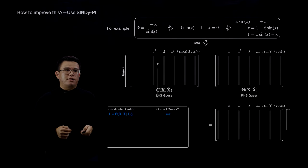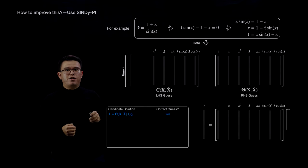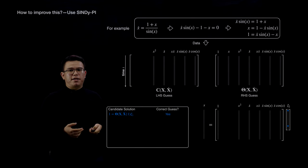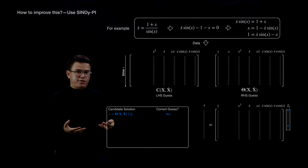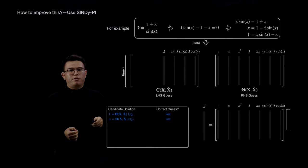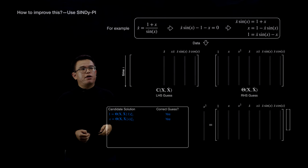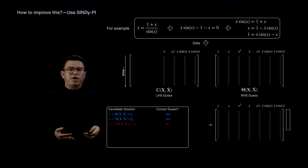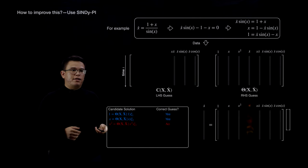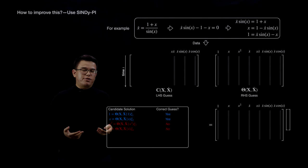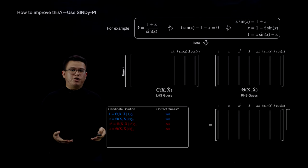Similarly, we can test the term x. Since x belongs to this implicit equation, after sparse regression you get a sparse model and the terms 1 and x-dot times sin(x) are selected; testing this model on testing data generates a very low prediction error. Now let's try x-squared—it doesn't belong to the implicit equation, so the sparse regression typically overfits the library, producing a non-sparse model that performs poorly on testing data. Likewise, x-dot doesn't belong to the equation, so you get a non-sparse model with poor testing performance. Similarly for x times x-dot—again not sparse, poor testing performance.